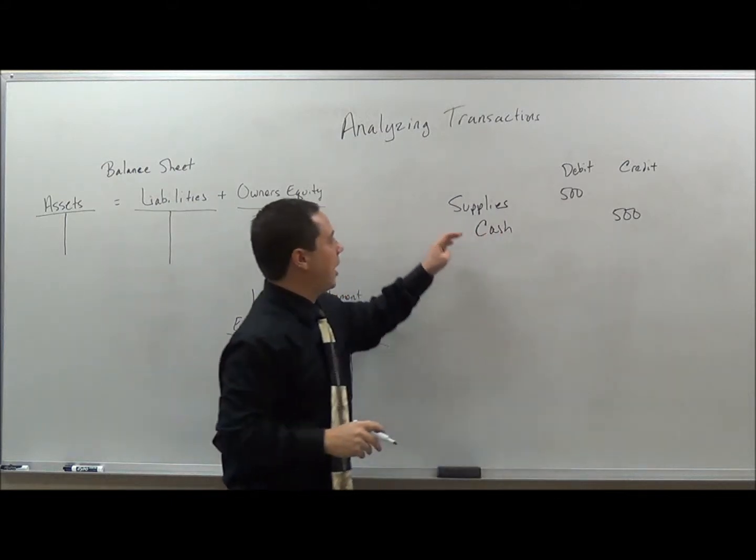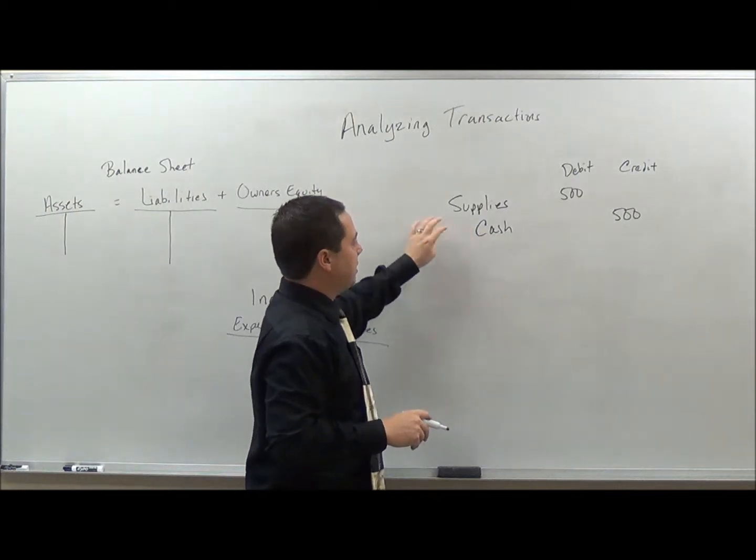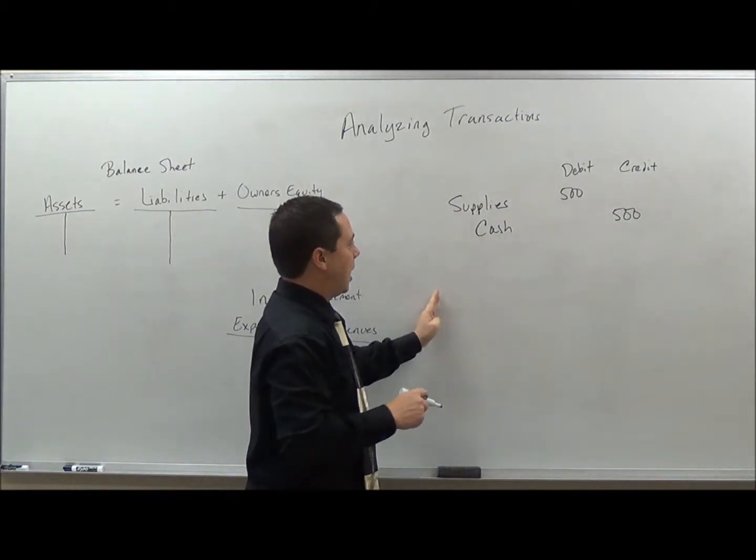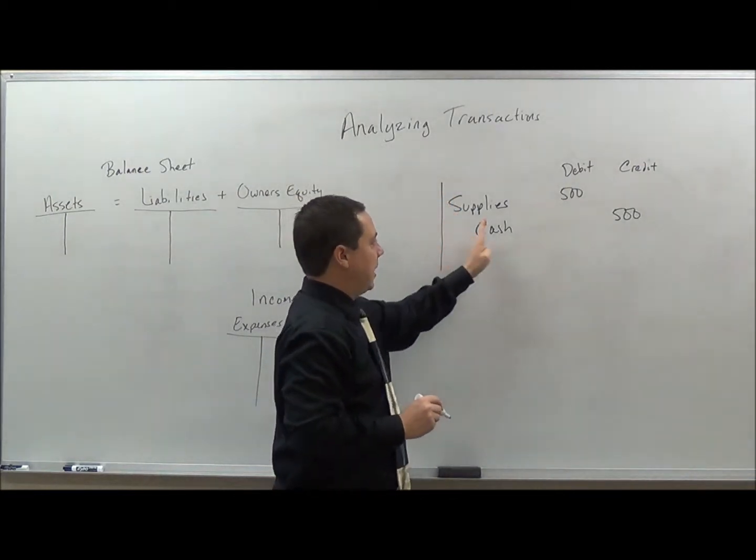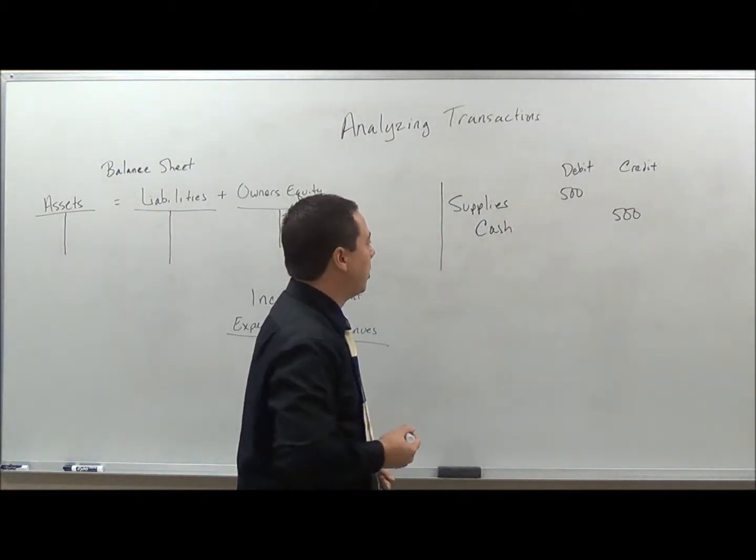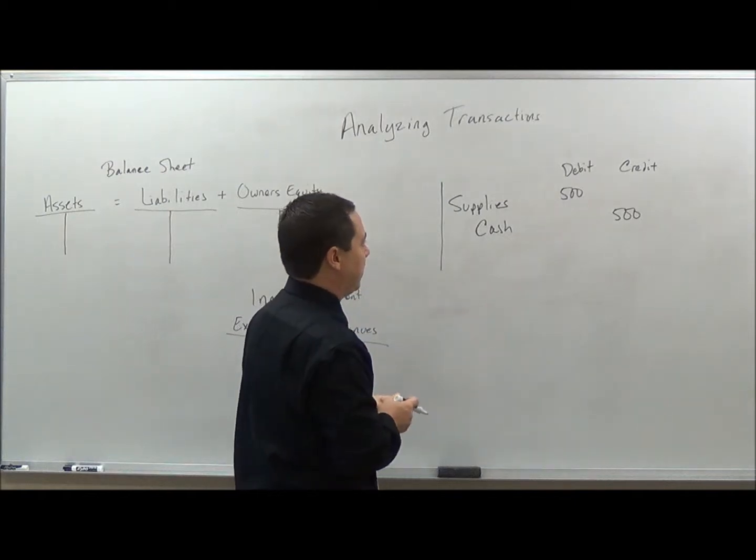You will see here that I have $500 of debit and a $500 credit. The reason I have this indented is to show that this is a credit. So anything that's flush on the left hand side here will be a debit, and anything that has an indent will be a credit. So how does this affect the accounting equation?